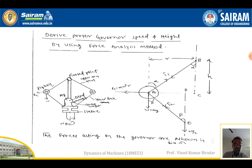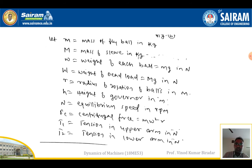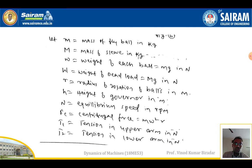The notations used are: small m = mass of the fly ball (governor ball); capital M = mass of the sleeve in kg. Small w = weight of each ball = mg in Newtons; capital W = weight of the dead load added at the axis of the shaft = Mg. r = radius of rotation of the ball from the spindle axis; h = height of the governor; capital N = equilibrium speed in rpm.